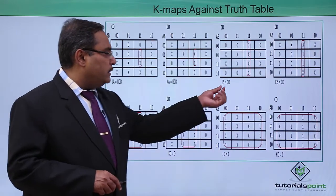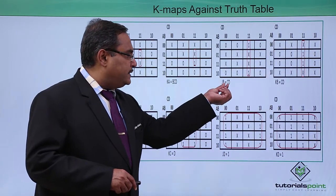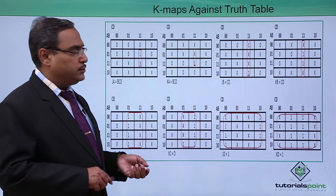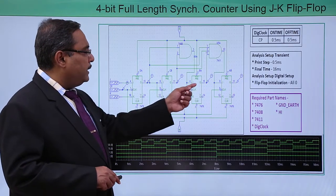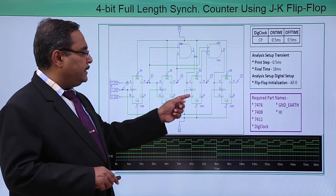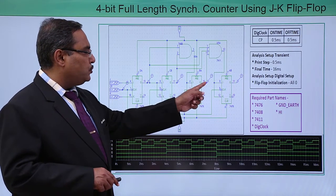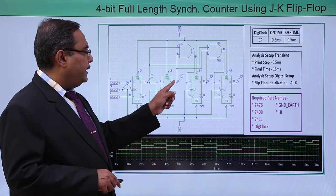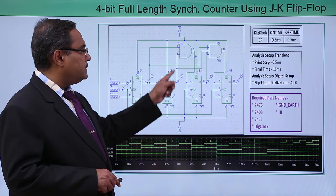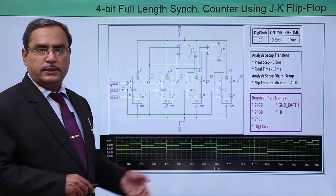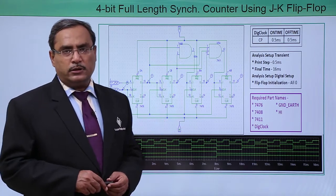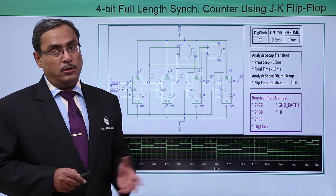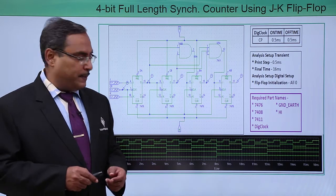JB is CD and KB is CD. This is JB and KB because it is the B flip-flop output. The output coming from here is nothing but C and D. In this way the circuit has been constructed, and the simulation output matches exactly what we were expecting.